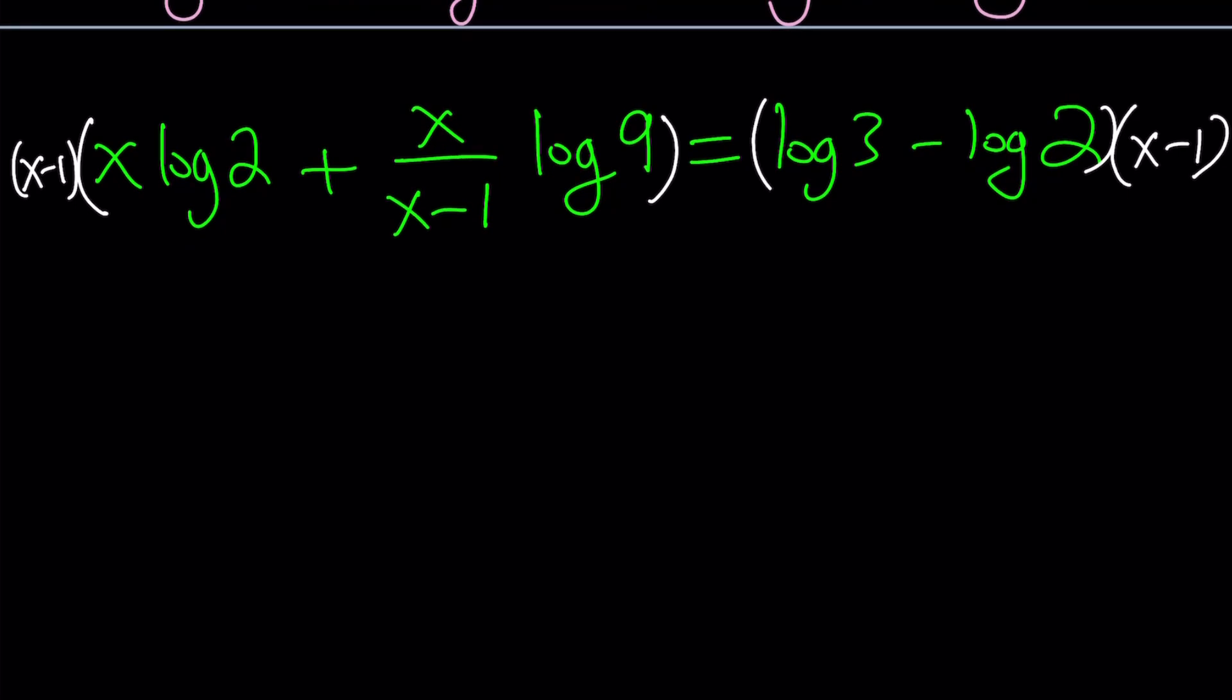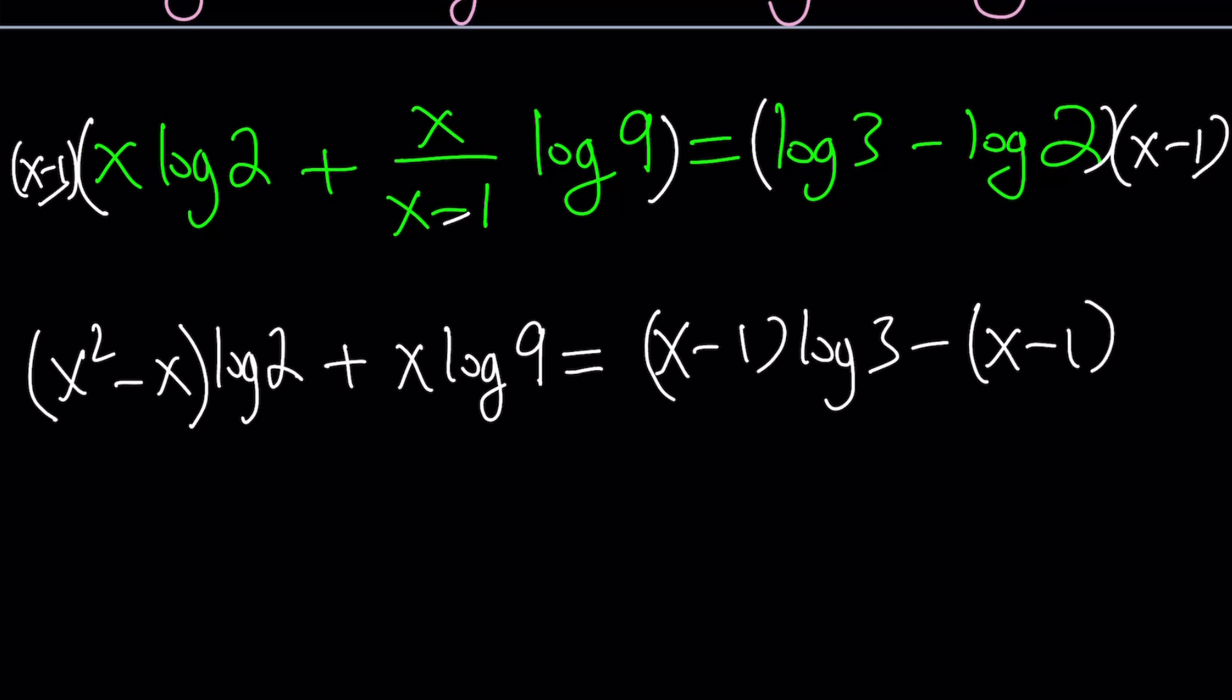Let's go ahead and multiply this and that by x minus 1. And the left hand side we're going to distribute x times x minus 1. That's going to give us x squared minus x multiplied by log 2. And then obviously here x minus 1 is going to cancel out. So it's going to leave us with x log 9. And the right hand side is going to be x minus 1 times log 3.